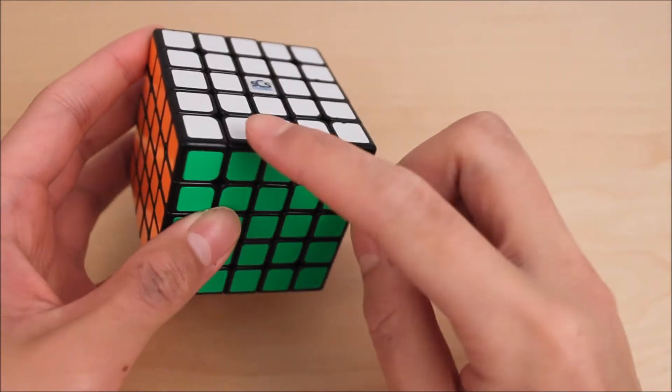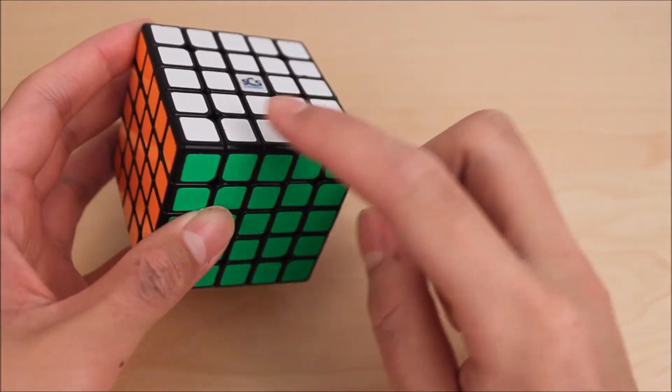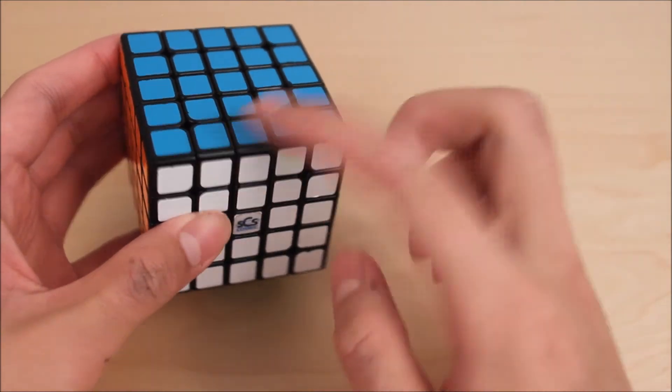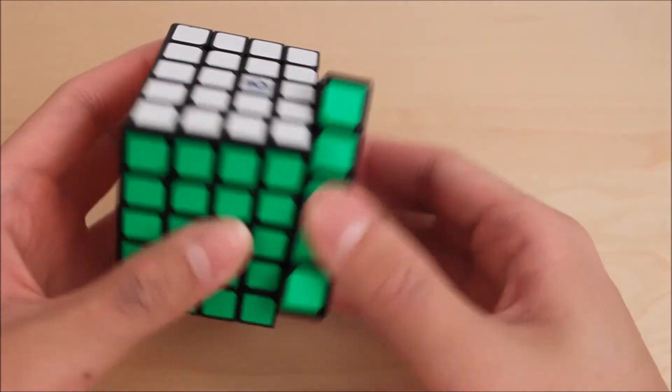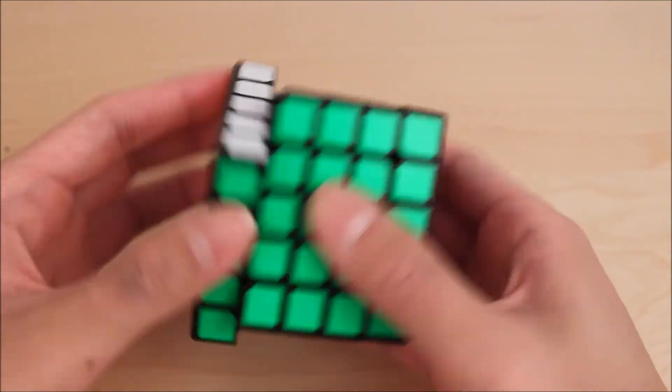Lastly, I want to quickly cover how to do this on cubes above 4x4. For 5x5, it's very similar and you just trace these wings. The same idea is followed and every inner quarter turn switches the parity state. The outer and middle layers do not change anything.